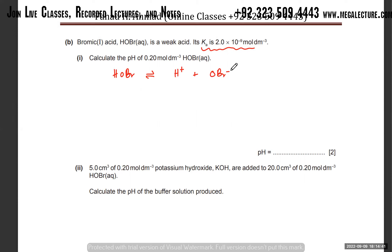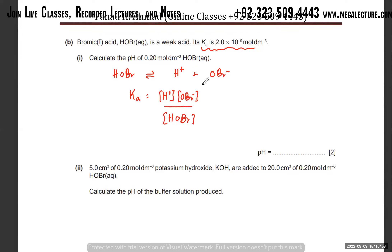You can write the expression for Ka, which is [H⁺][OBr⁻]/[HOBr]. Since both ions have the same concentration, you can also write it as [H⁺]² divided by [HOBr] concentration. The Ka value is 2 × 10⁻⁹ and [HOBr] = 0.2 mol dm⁻³.